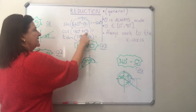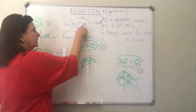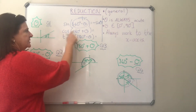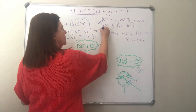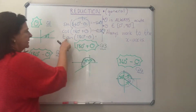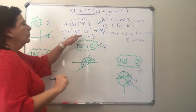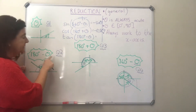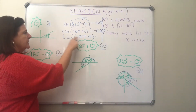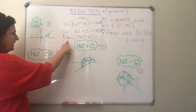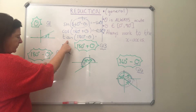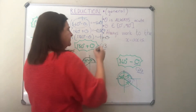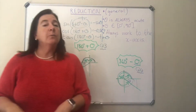Next, cos of 180 degrees plus theta: 180 plus theta takes us to the third quadrant and cos is negative there, so it becomes negative cos theta, because the acute angle is theta. Then tan of 180 minus theta: 180 minus theta is in the second quadrant, and tan is negative in the second quadrant — tan is positive in the first and third quadrants — so this becomes negative tan theta.